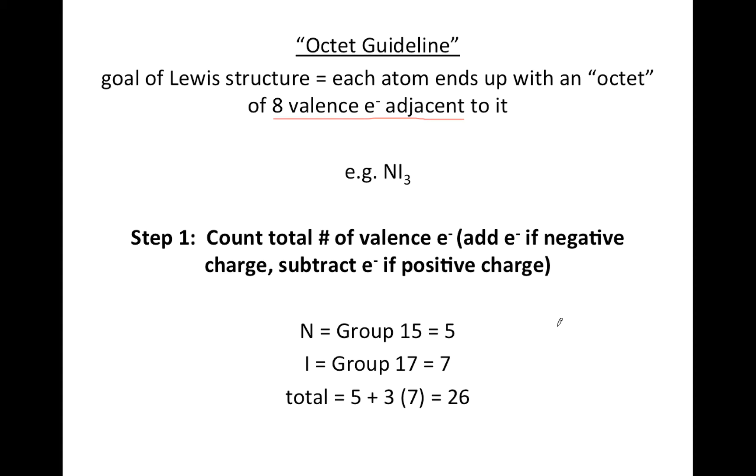Step one says count total number of valence electrons, and in parentheses here it says that you would add electrons if it was a polyatomic ion with a negative charge or subtract electrons if it was a polyatomic ion with a positive charge. Using the table on the previous slide,